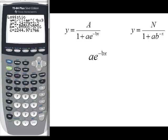For ae to the negative bx in the form from the calculator, that's the same as ab to the negative x in the form that WebAssign wants. We can cancel out the a's, and we get down to e to the negative bx equals b to the negative x.